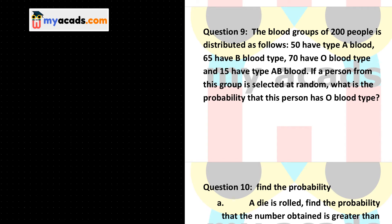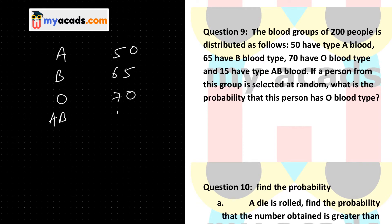The blood group of 200 people is distributed as follows: 50 have type A blood group, 65 have type B blood group, 70 have type O blood group, and 15 have type AB blood group.